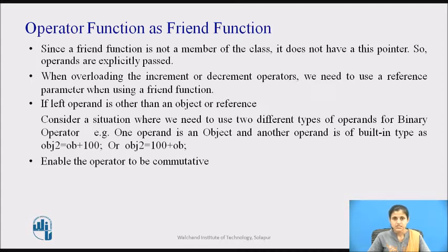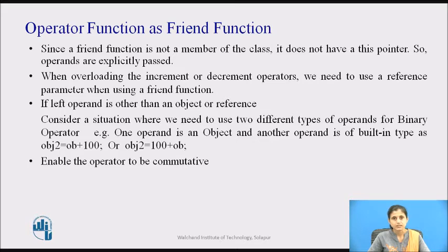But what happens if the expression is written as 100 + ob? In this case, an integer appears on the left. Since an integer is a built-in type, no operation between an integer and object ob is defined. Therefore, the compiler will not compile this expression.